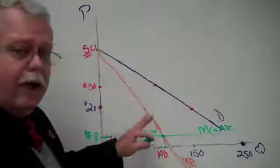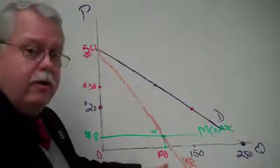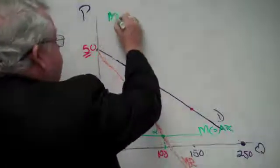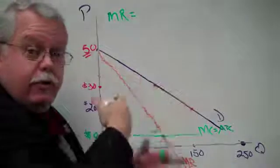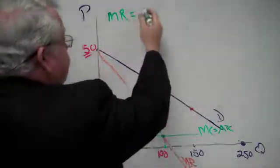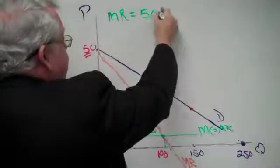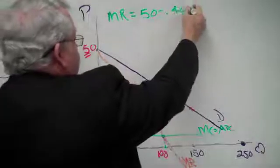How do we figure this out? How do we figure out how many units to produce? And the answer is, go back to the marginal revenue equation. Remember that? When we did the inverse demand, marginal revenue was equal to what? 50 minus 0.40 Q.